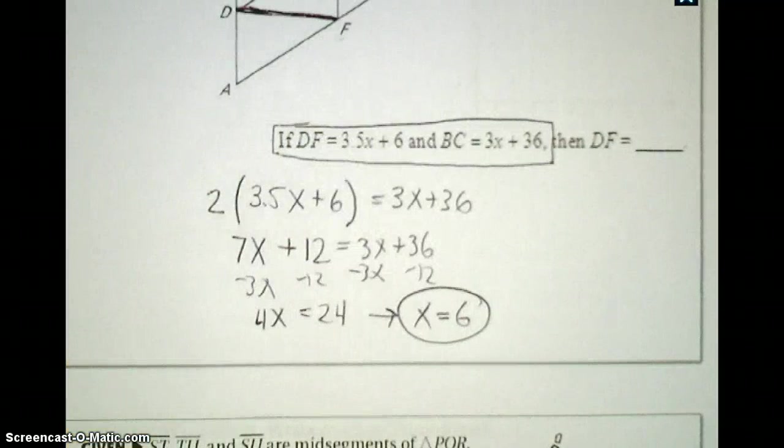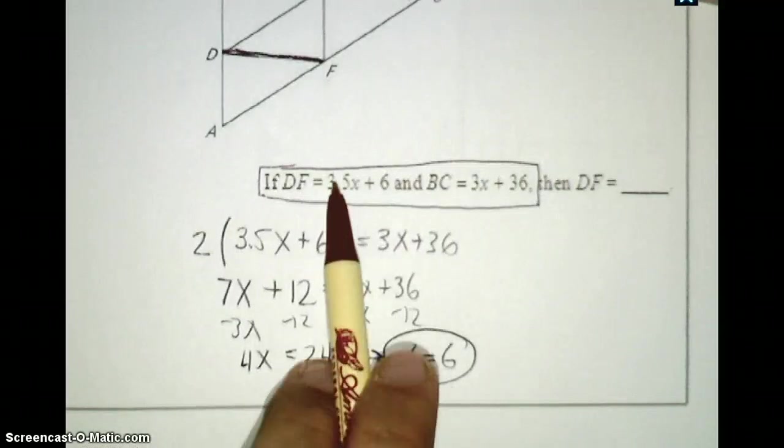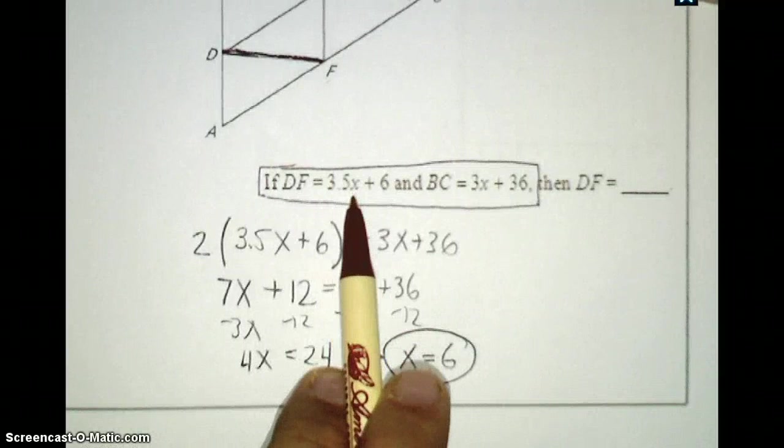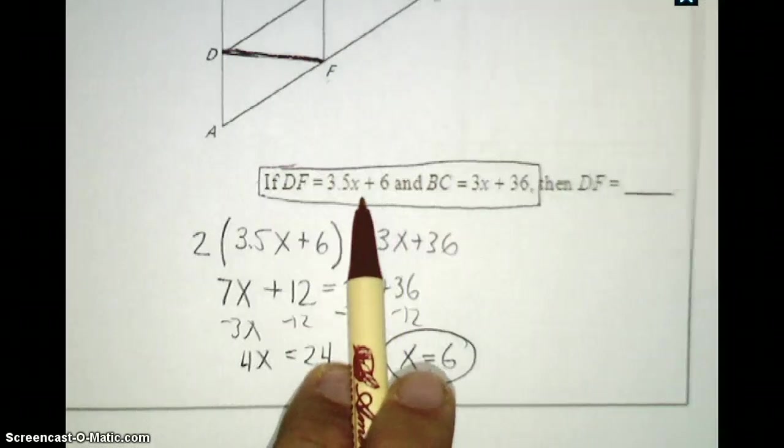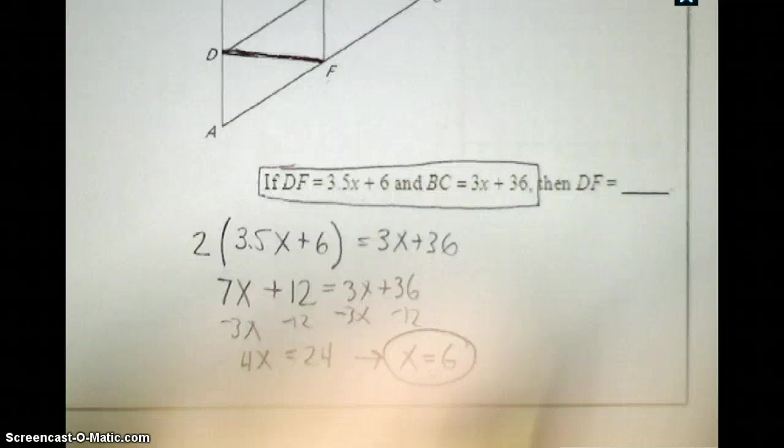Again, be careful with these algebraic problems because this is not what I'm asking you for. I'm asking you to tell me what the length of DF is. Since x is equal to 6, DF is equal to 3.5x + 6, I'm going to plug x into this, and I will end up with a result of 27.